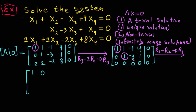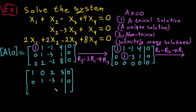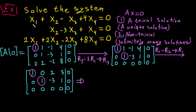After R1 minus R2: negative one minus negative three is plus two, and four minus one is three. So row 1 becomes 1, 0, 2, 3 | 0. The remaining rows stay the same. We now stop because we have two leading ones. There is no leading one below, so we stop the row reduction here.